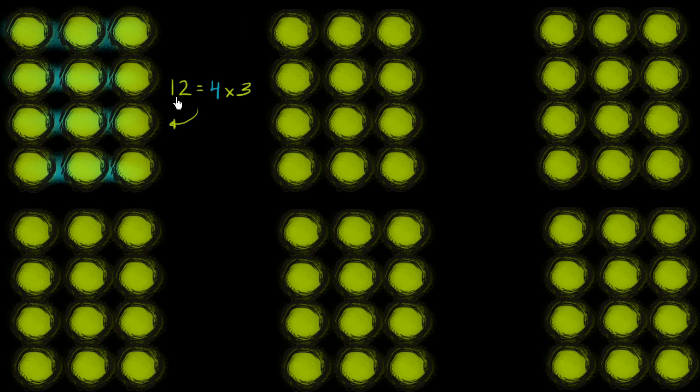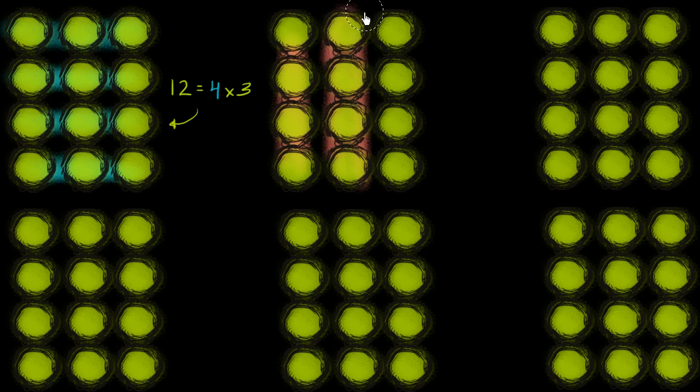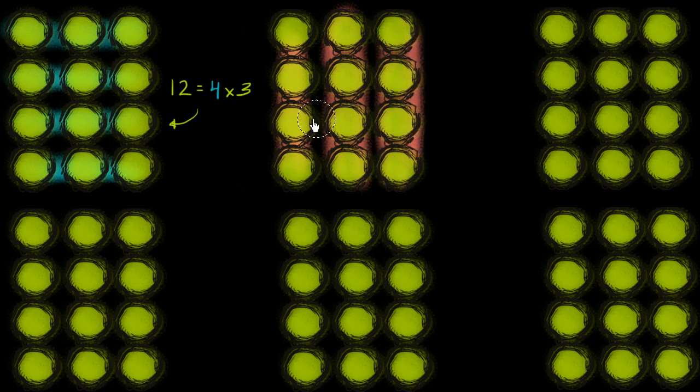But that's not the only way we can get to 12. We could also view it as 3 groups of 4. So let's look at that. So we could have 1 group of 4, 2 groups of 4, 3 groups of 4.